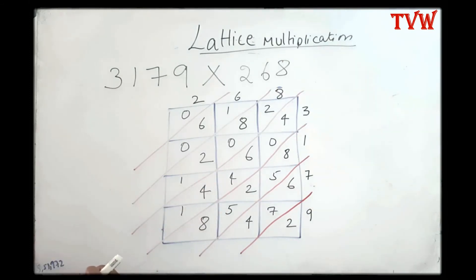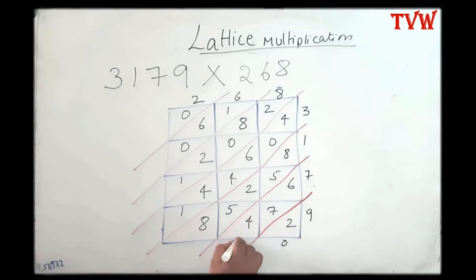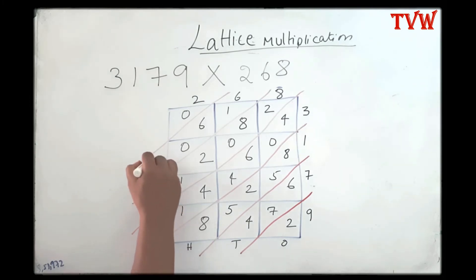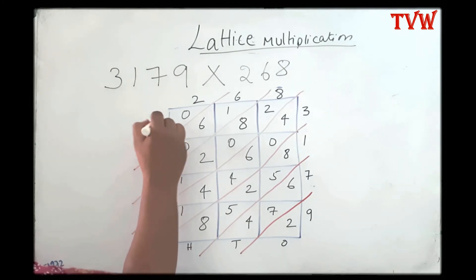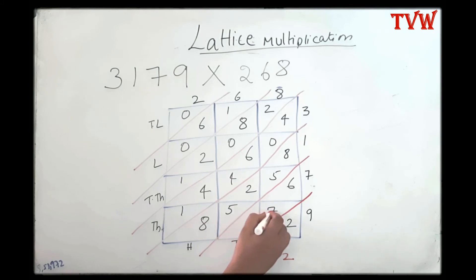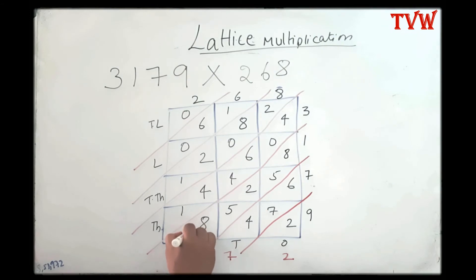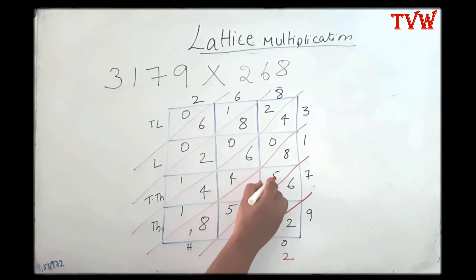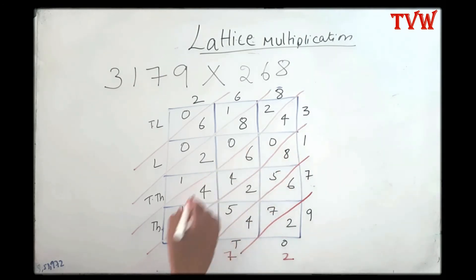Let us add and see. Below the first slanting line is our ones place, tens place, hundreds place, thousands place, ten thousands place, one lakh place, and ten lakhs place. Below the first diagonal we have only two. Next: four plus seven is eleven, eleven plus six is seventeen, so I carry over the one. One plus eight is nine, nine plus five is fourteen, fourteen plus two is sixteen, sixteen plus five is twenty-one, twenty-one plus eight is twenty-nine.